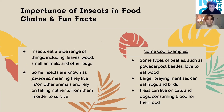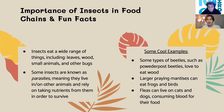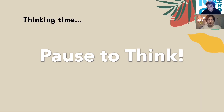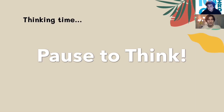Next we'll talk about insects. Some important facts about insects in the food chain are that insects can eat a wide range of things including leaves, wood, small animals, and even other bugs. Some insects are known as parasites, meaning they live in or on other animals and rely on them for food to survive. Cool examples include beetles such as the powder post beetle that loves to eat wood; large praying mantises can actually eat small frogs and birds; and fleas can live on cats and dogs, eating their blood for food. Thanks for watching — now for thinking time: think about how birds might hunt and look for prey such as smaller animals.